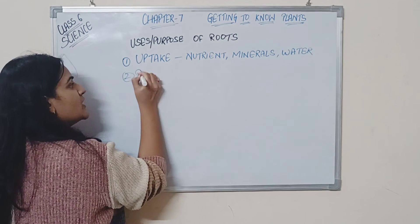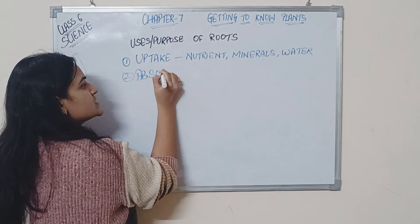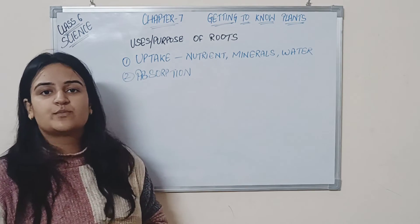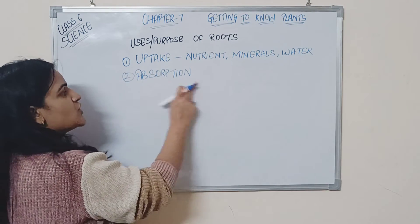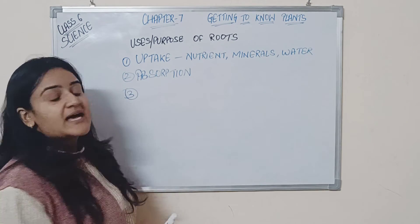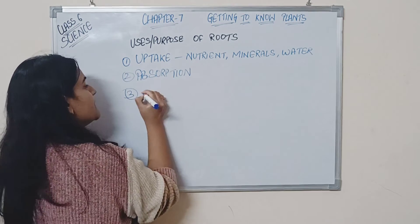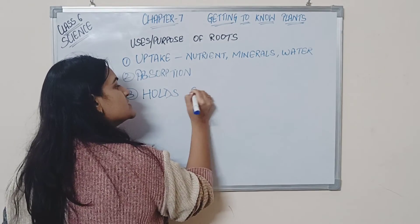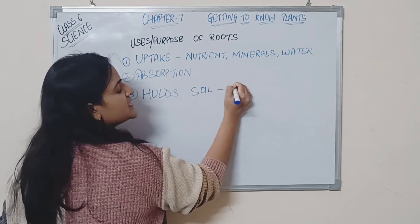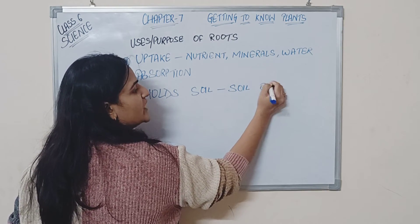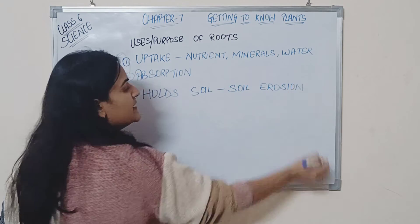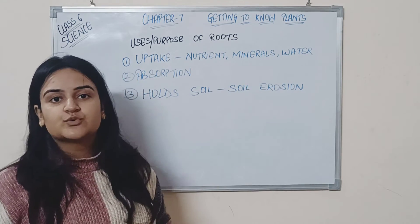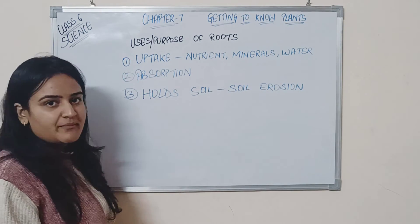The second purpose is absorption. It is not necessary that everything is provided directly to the root — it has to absorb through its root hairs, so absorption is done from the root. The third point is that roots hold the soil together and help with the attachment of the plant to the soil. This also helps avoid soil erosion, which is why it is said to plant more trees, so that roots can hold the soil and prevent it from eroding.